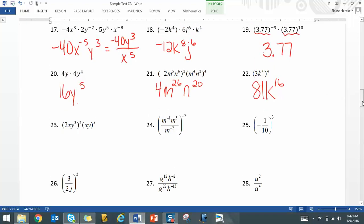23. Again, I'll be kind of doing this simultaneously. That's 4x squared, x to the fifth. So it's x to the seventh. And then it's y to the sixth, y to the fifth. So y to the eleventh.